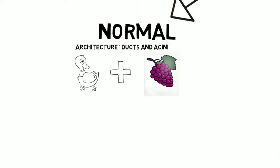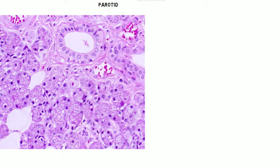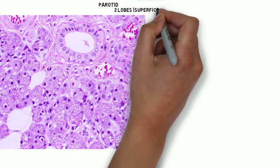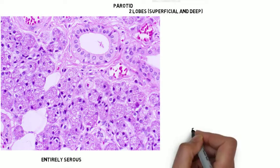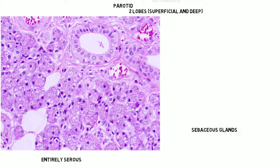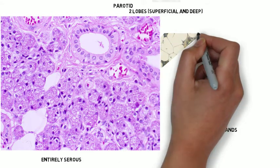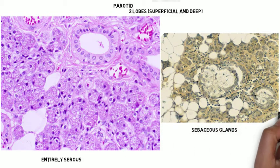This holds true for the parotid, the submandibular, and the sublingual gland. The parotid gland is comprised of two lobes — superficial and deep — and is entirely serous. All of the acini in the parotid gland are serous acini. There are also a number of sebaceous glands interspersed throughout the parotid gland; they do show up in the tissue and on exams.